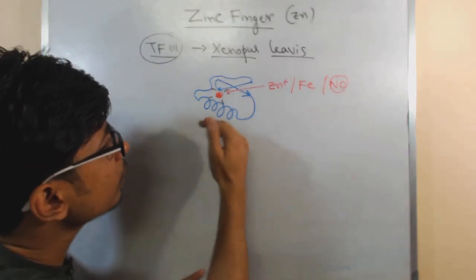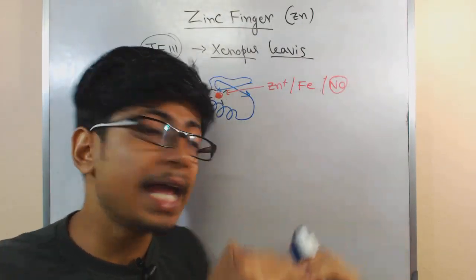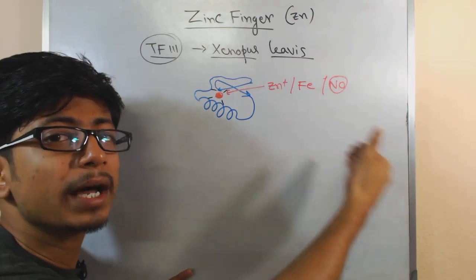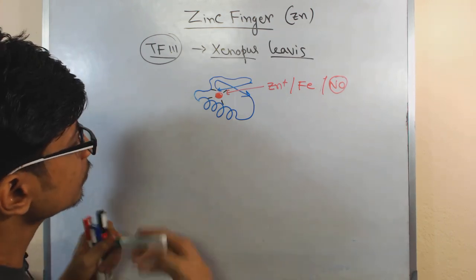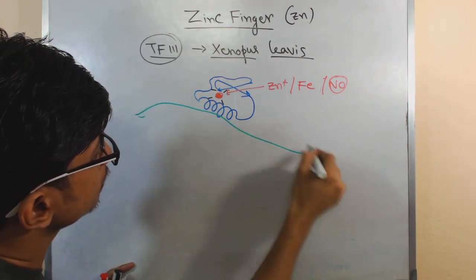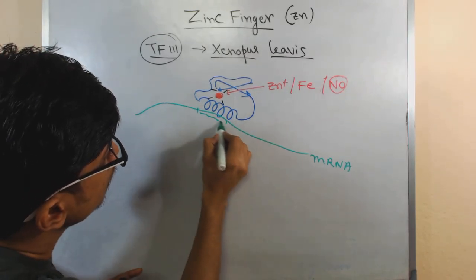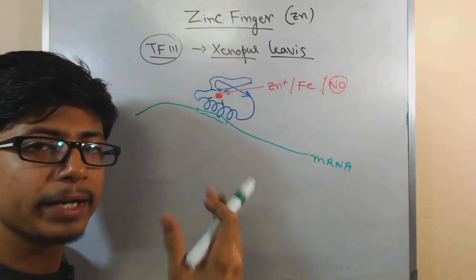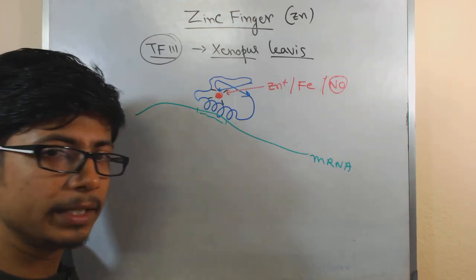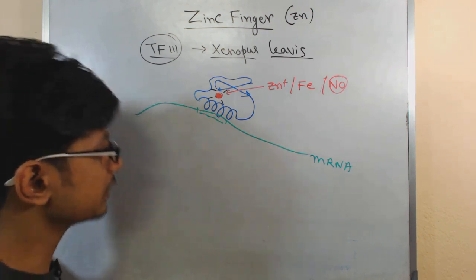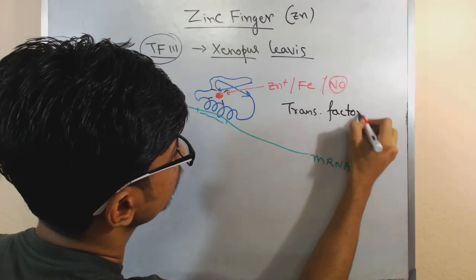This is a kind of interacting site made with different amino acids located one after another, and they interact with tandem structures in the mRNA or DNA. We have a particular tandem structure in the mRNA or DNA, and the zinc finger motif starts to bind with those structures in different places.